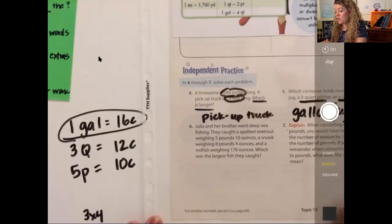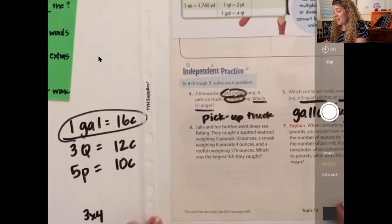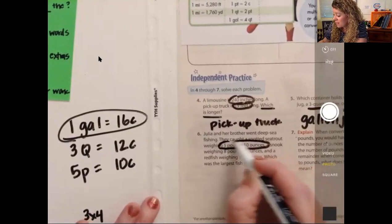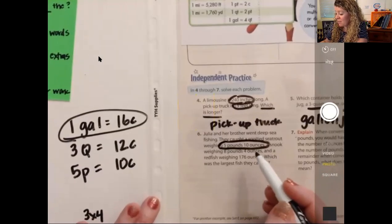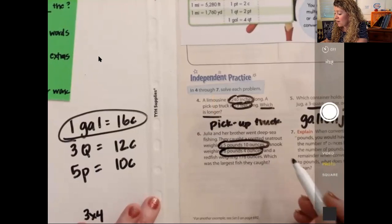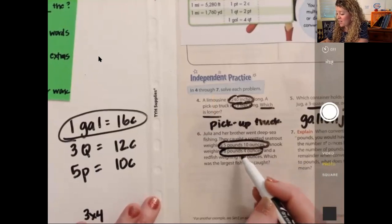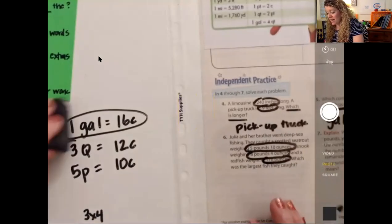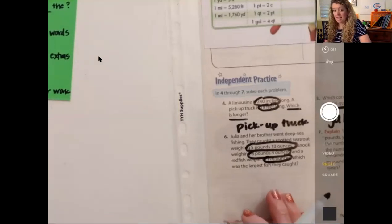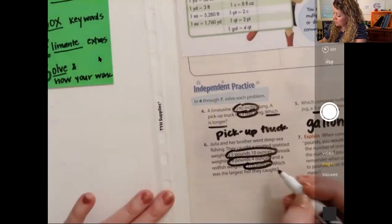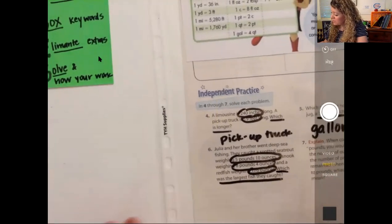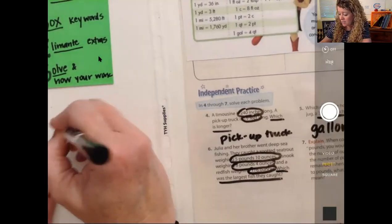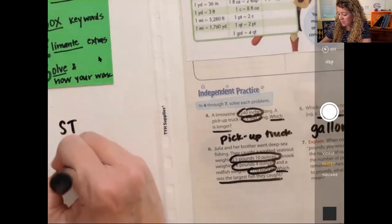All right, let's keep going on to number six. Julia and her brother went deep sea fishing. They caught a spotted sea trot weighing five pounds, 10 ounces. Those are some numbers we're going to need. And they caught a snook weighing eight pounds, four ounces. And a redfish weighing 176 ounces. Which was the largest fish they caught? So we're going to have to convert each one of these into ounces. So our question is, which was the largest? And so there's a sea trot, a snook, and a redfish.